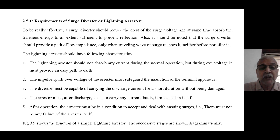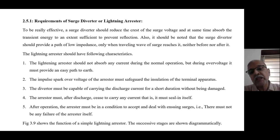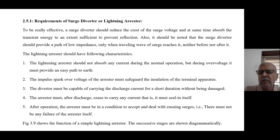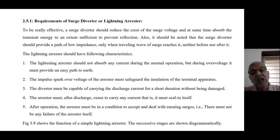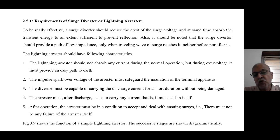The second requirement: the impulse spark-over voltage — the value at which the arrester sparks over and grounds the current — must safeguard the insulation of the terminal apparatus, meaning all transformers, CT, PT, etc. Third requirement: the diverter must be capable of carrying the discharge current for a short duration of time, because it is carrying current of the order of 10,000 amperes. The total lightning activity is complete within one millisecond, but for that short time it must carry that current without being damaged.